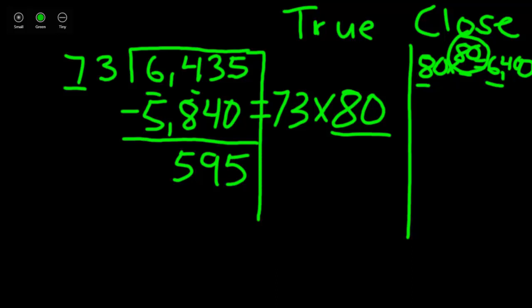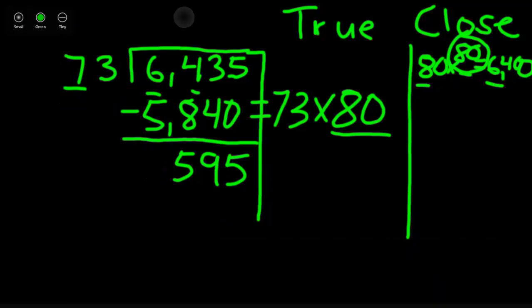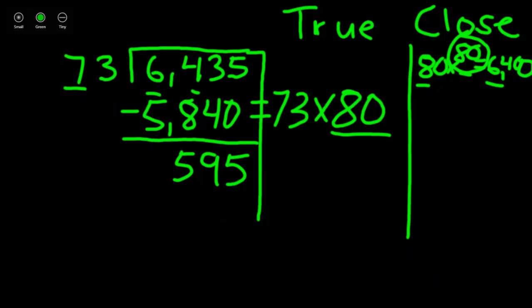Now we want to multiply our 73 by a number to get us close to 595 but not over. So again, let's take these two numbers and make them easier. Let's turn 73 to 80. Put that in a close column. What are we going to multiply that by? To get us close to 595, but I like to just again take my first two digits.